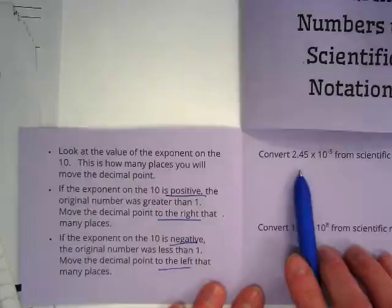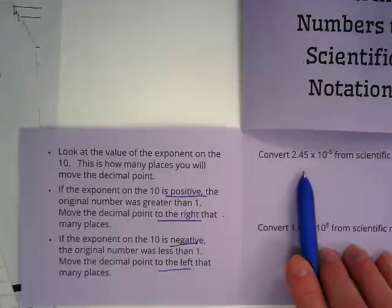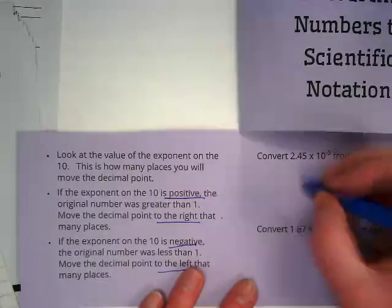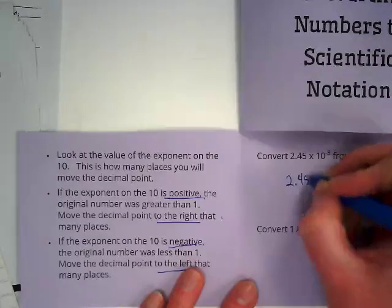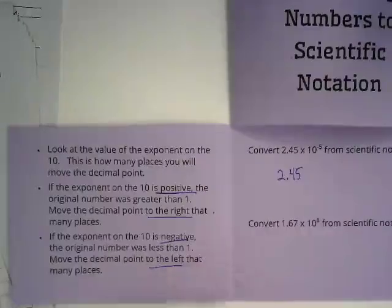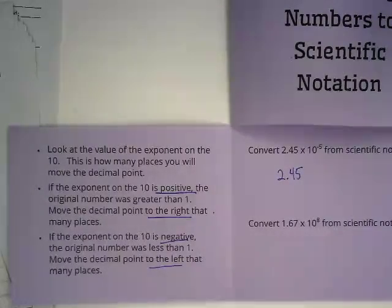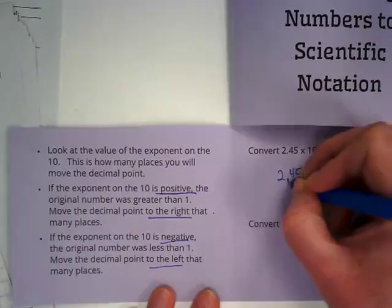So we're going to convert 2.45 times 10 to the negative 5th from scientific notation into a number. So first thing you want to do is write the 2.45. And we're going to move the decimal point to the left. How many places? Five.